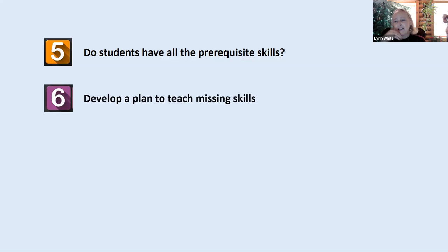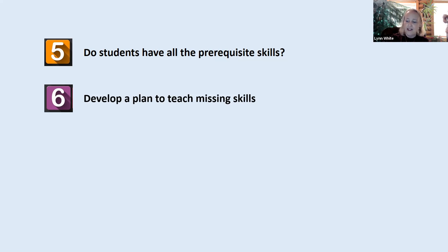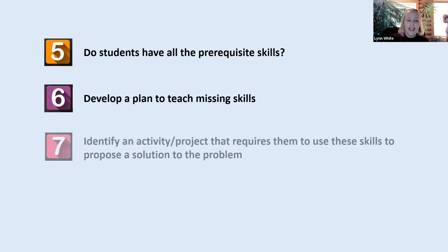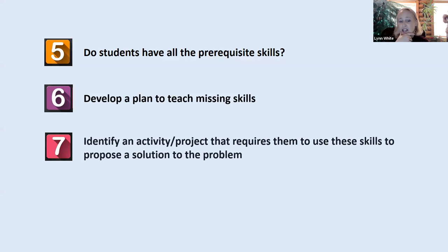The sixth step is to develop a plan — you can have miniature activities building up to the final product. Then the really tricky part, the hardest one, is identifying an activity or project that requires students to use the macro level skills to solve or propose a solution to the problem.